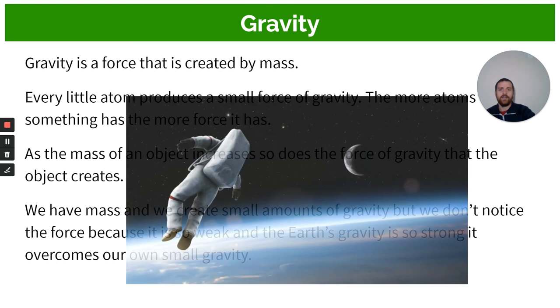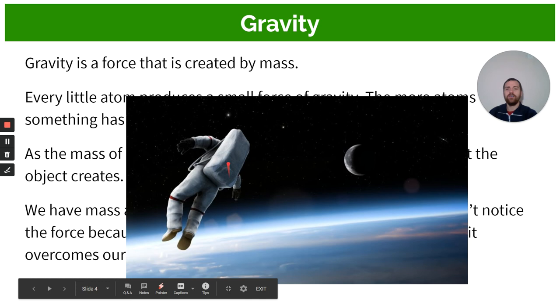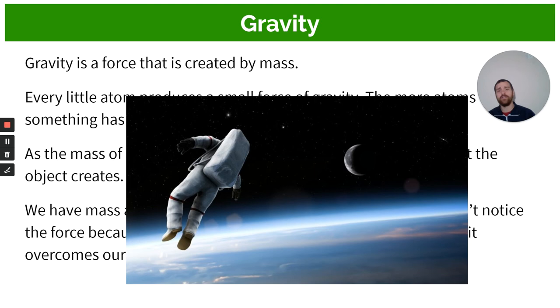So yeah I just want you to see this picture here. There's three things in this picture. There's the moon, there's the earth, and there's an astronaut. All three of those things are made of atoms. So all three of those things are creating gravity all right. Right now the moon is creating in gravity, the earth is creating in gravity, and that astronaut is creating in gravity okay. They're all pulling things towards them.